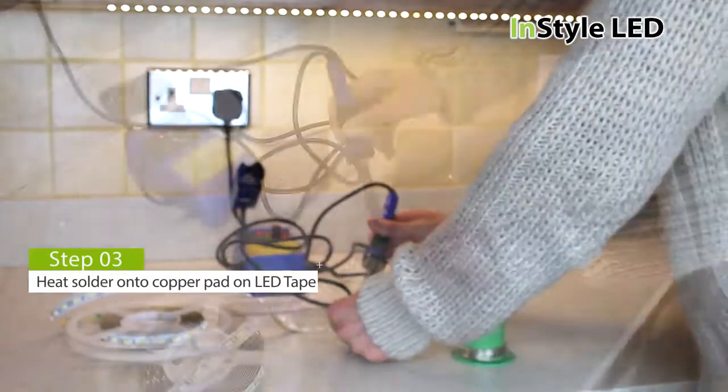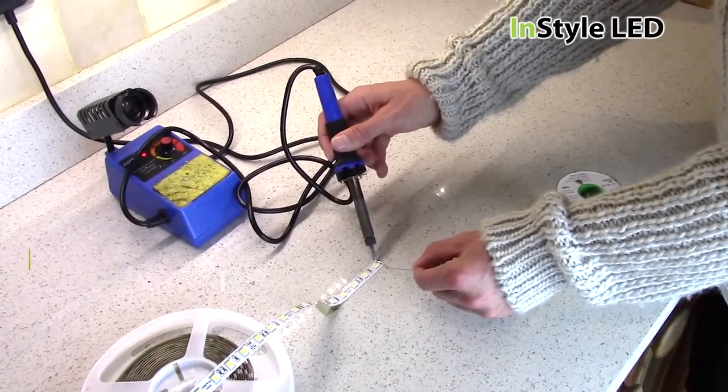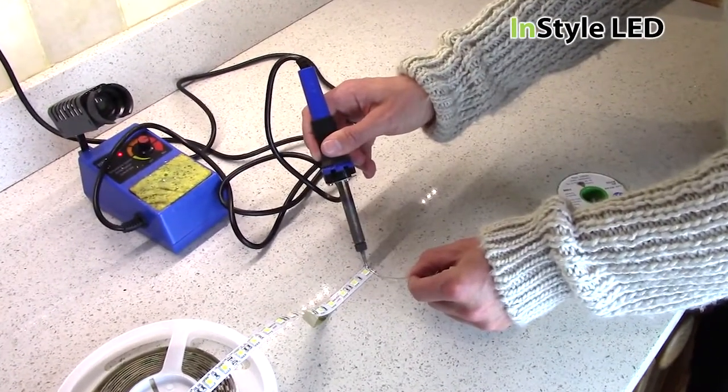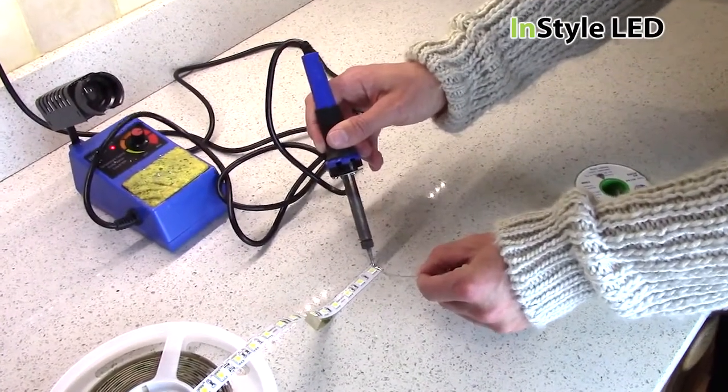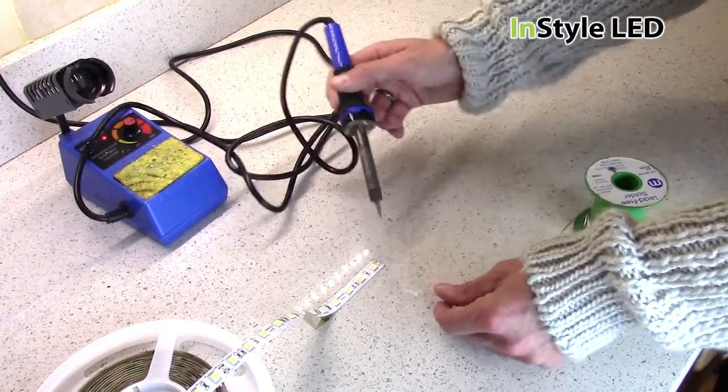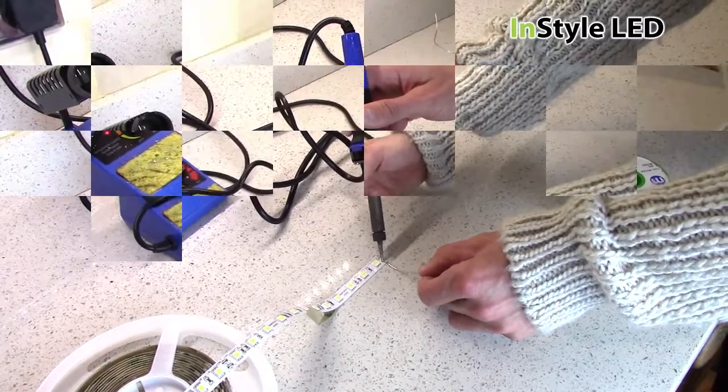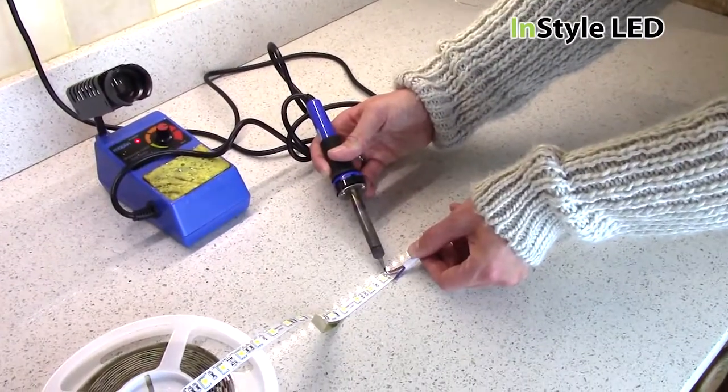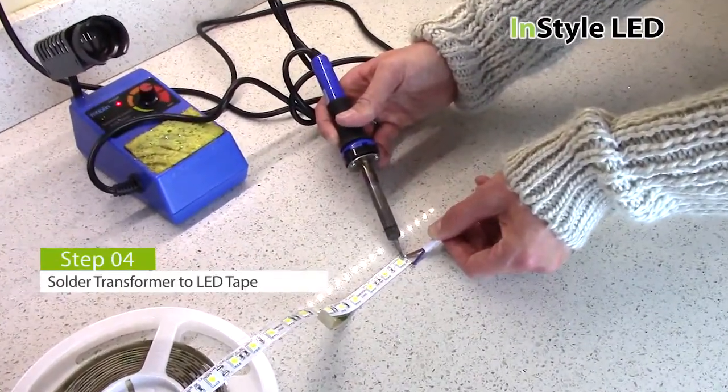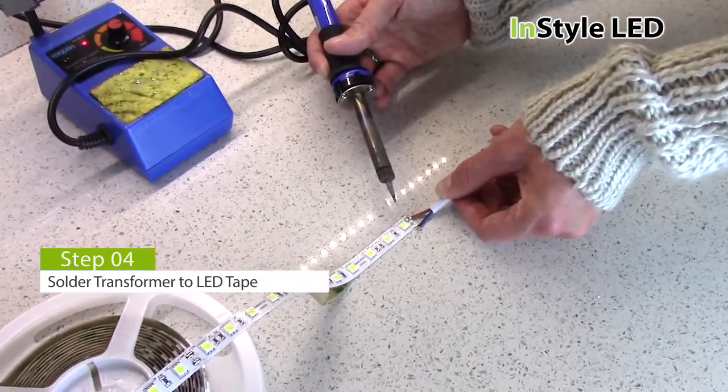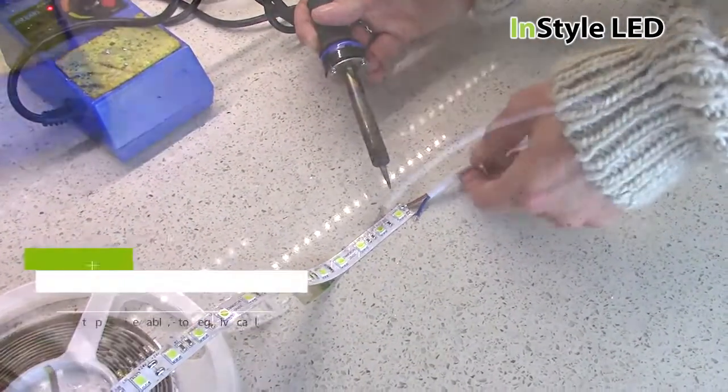Next apply solder to the LED tape pads. Then solder the transformer cables to the LED tape. Be sure to correctly wire the positive and negative, these are marked on the LED tape.